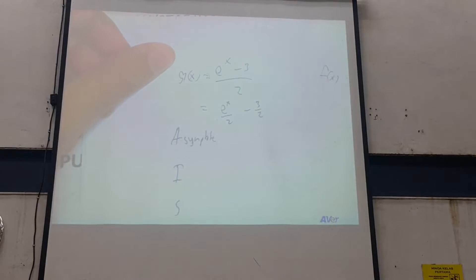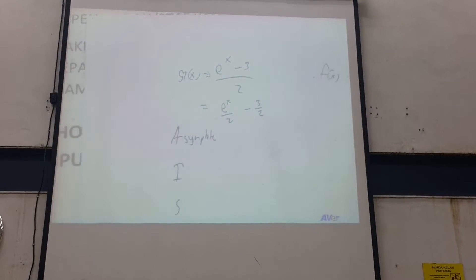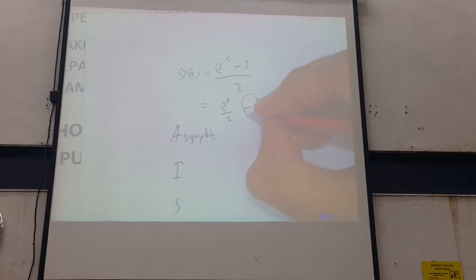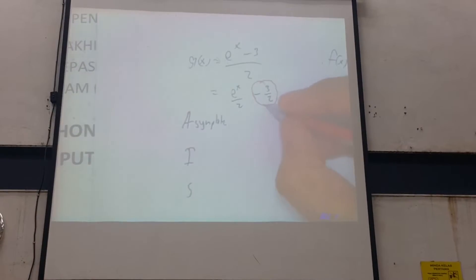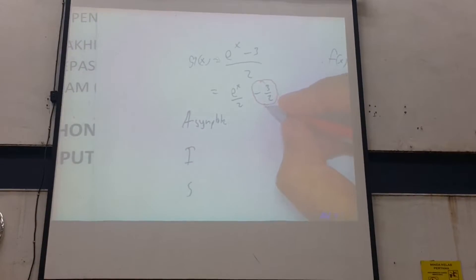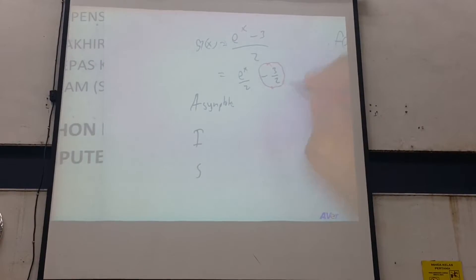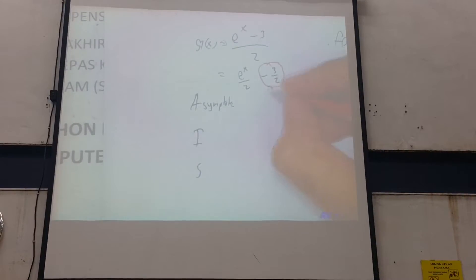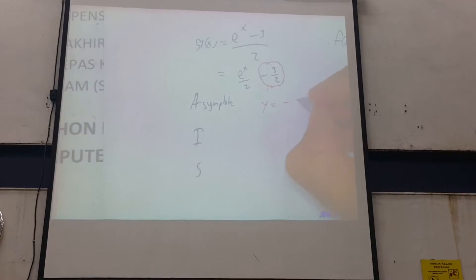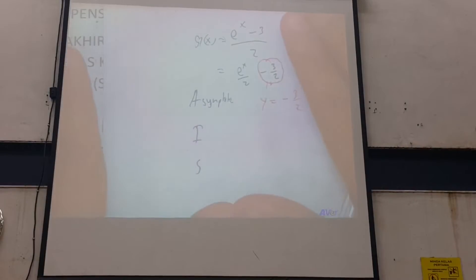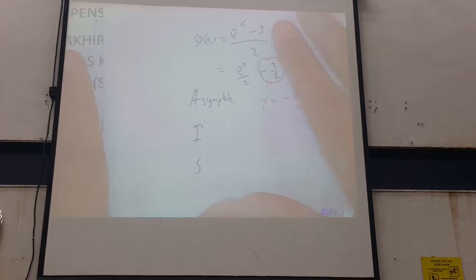Break it down. How do you find the asymptote? Negative 3 over 2. So this is your asymptote, this is HY. So the asymptote is Y equals to negative 3 over 2. Do you want me to repeat that again? No. Thank you.